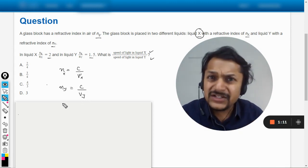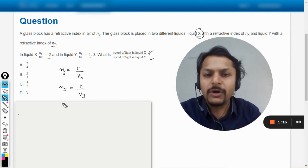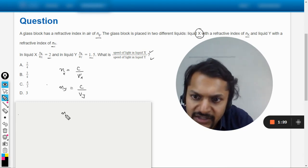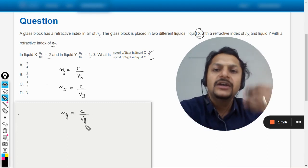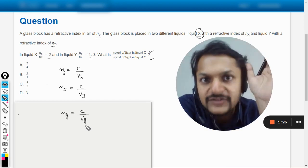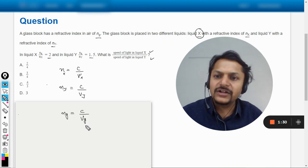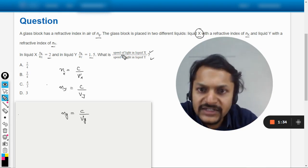Even if they were asking about the glass, the formula will be the same. You would be writing the refractive index of glass as C divided by the velocity of light inside the glass. But we are talking about inside the liquid, so whether the glass is there or not doesn't matter.